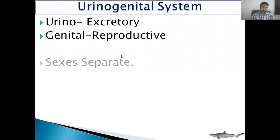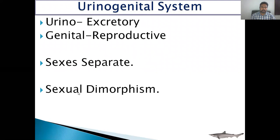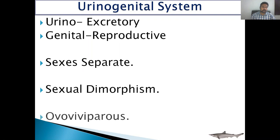In Squalus, sexes are separate, meaning there are different male and female individuals, and Squalus shows sexual dimorphism, meaning we can easily identify between male and female Squalus. As we know, in the case of male Squalus, an intromittent organ called the clasper is present near the pelvic fin. Squalus is ovoviviparous, meaning they directly give birth to young ones. So let's start and see the male urinogenital system of Squalus.